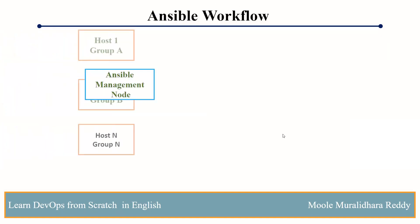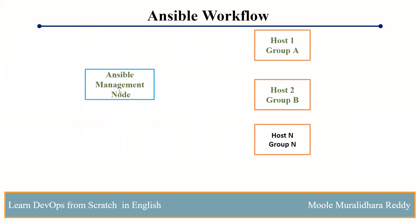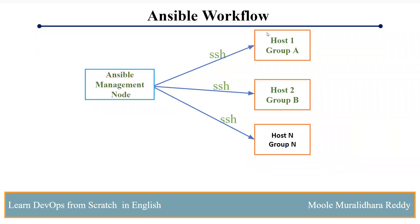We have one Ansible management node — that is nothing but a server where we have installed Ansible — and we have destination servers. We can call them host1, host2, host3, and so on. This Ansible server will be connected to destination servers through SSH, which is Secure Shell. If you want to connect one server to another server, we use SSH, and we set up that SSH connection between the Ansible server and the destination servers.